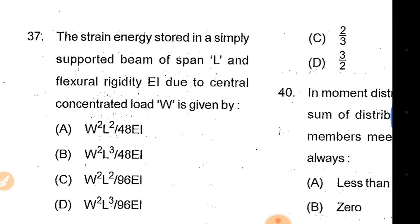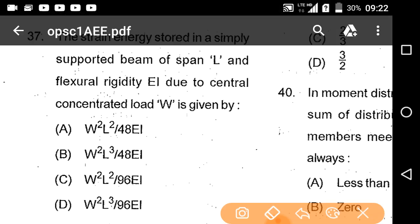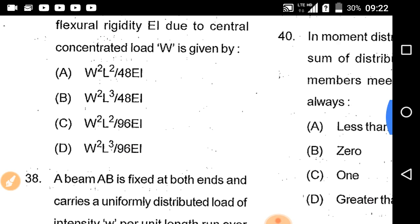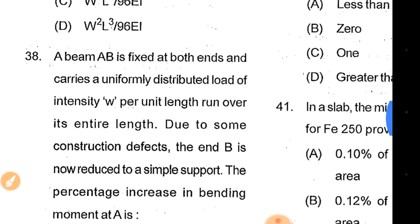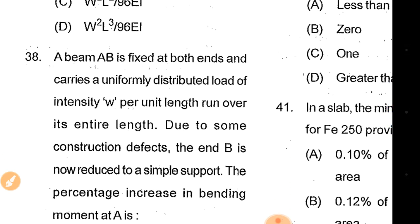The strain energy stored in a simply supported beam of span L and flexural rigidity EI due to a central concentrated load W is given by WL³ divided by 96EI. Option D is the correct answer.